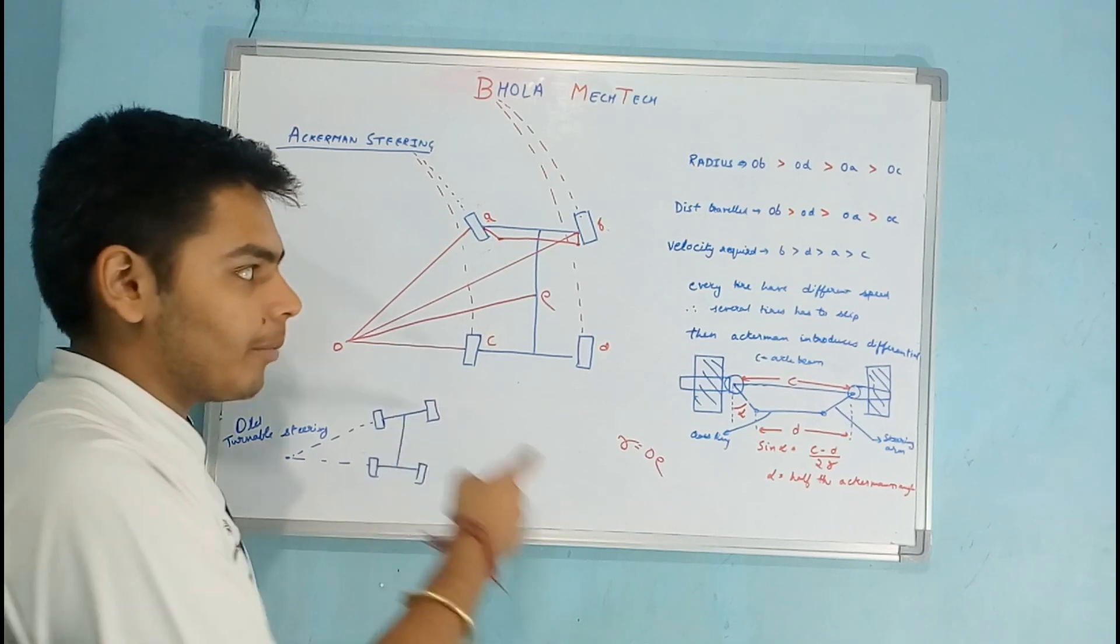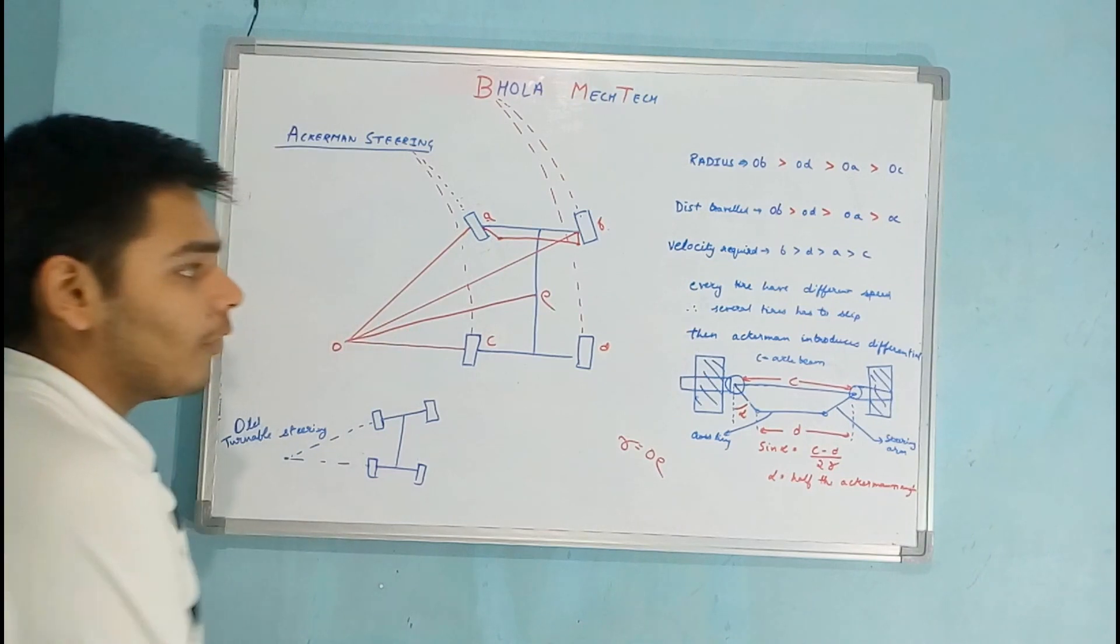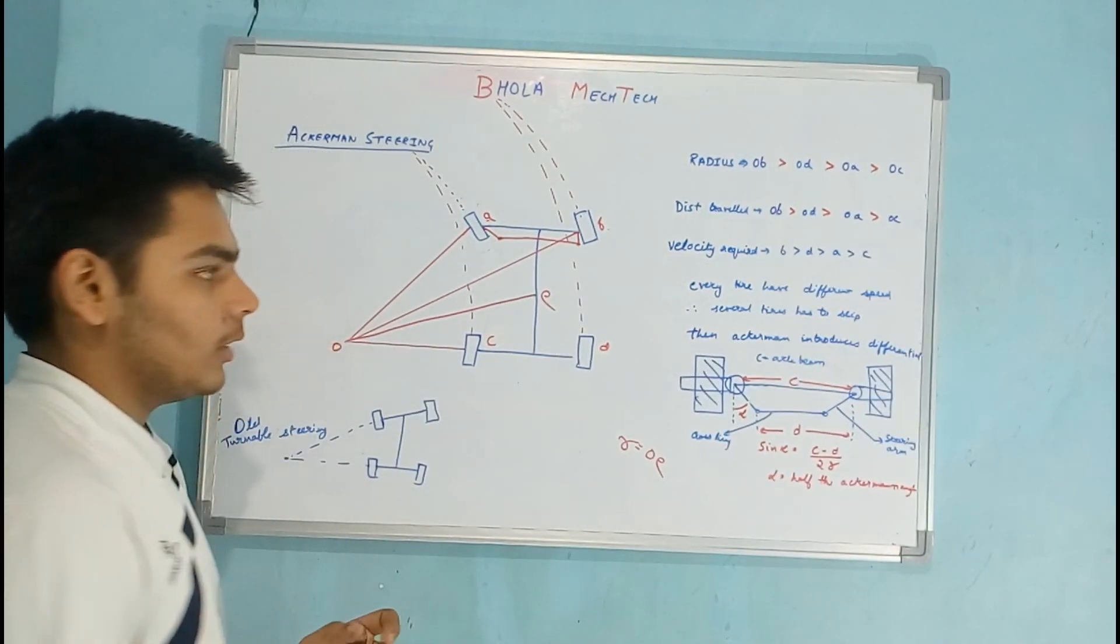Then the velocity of D, then velocity A, then velocity C. So every tire has a different speed.